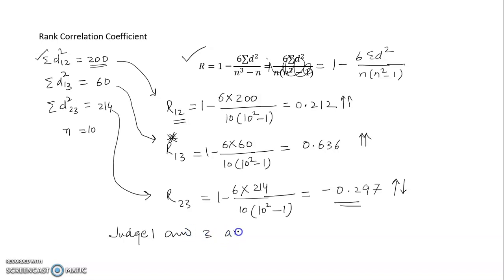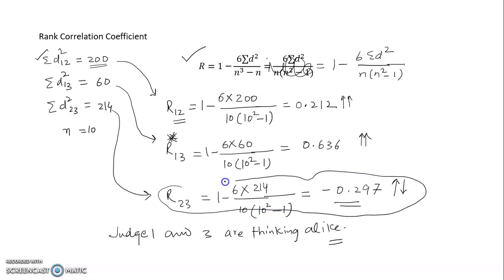To conclude: judges 1 and 3 are the most alike in their judgments. Having like-minded judges is important — if two judges think in opposite directions, as judges 2 and 3 do, you cannot reach a concrete decision. For example, judge 2 might prioritize intelligence while judge 3 prioritizes personality. Thank you — I hope it is clear how to solve a three-judge Spearman rank correlation problem.